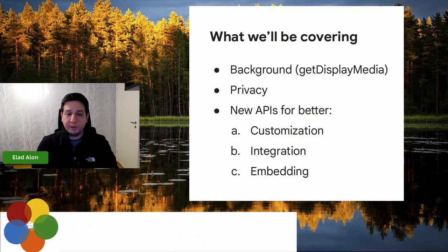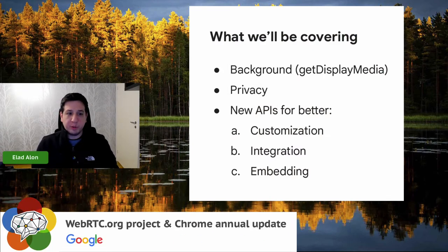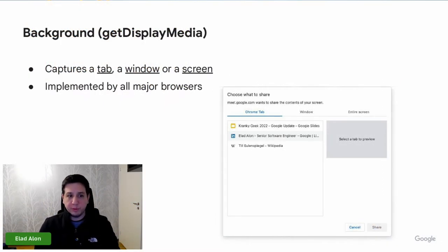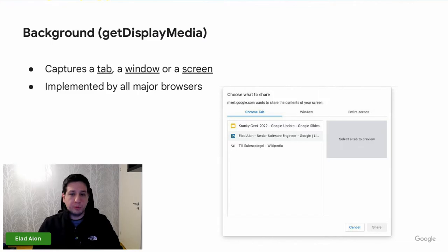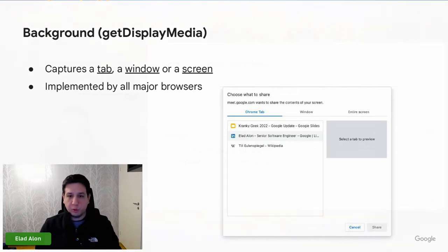I'm Elad, and I'm here to talk about screen sharing. GetDisplayMedia is an API that allows you to capture a tab, a window, or a screen. It's been implemented by all major browsers, and with each particular browser you get a different type of media picker that allows you, as the user, to decide what you want to share. In Chrome, it looks roughly like this. Once you actually start capturing, you can do anything you would like with this video — store it locally to a file, store it remotely, or transmit it in real time to a video call.